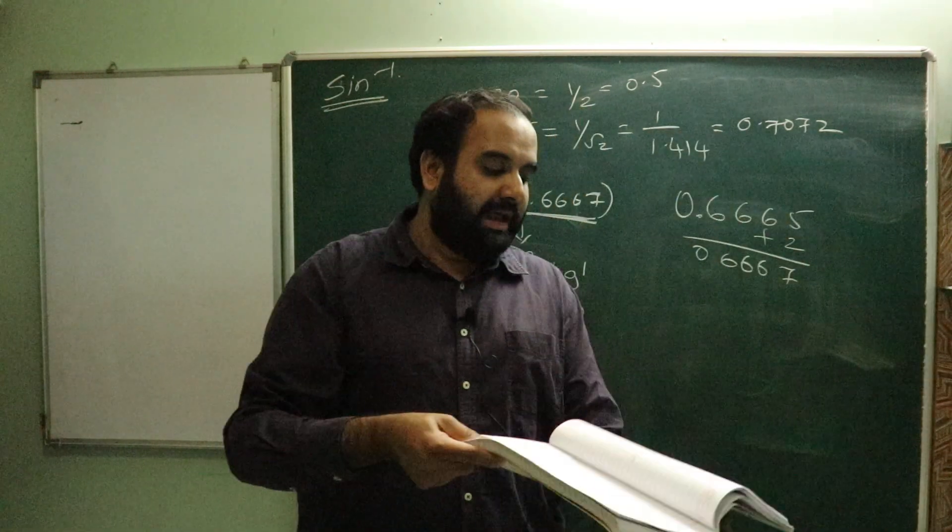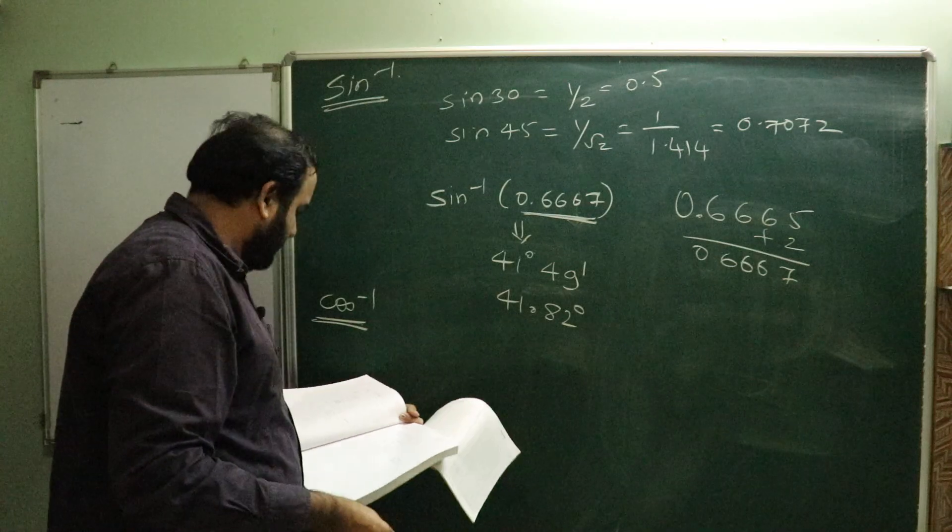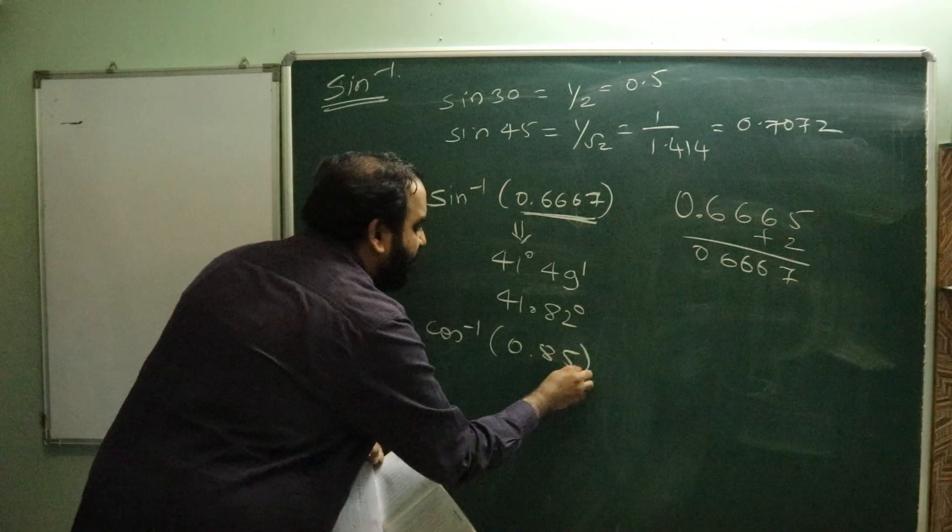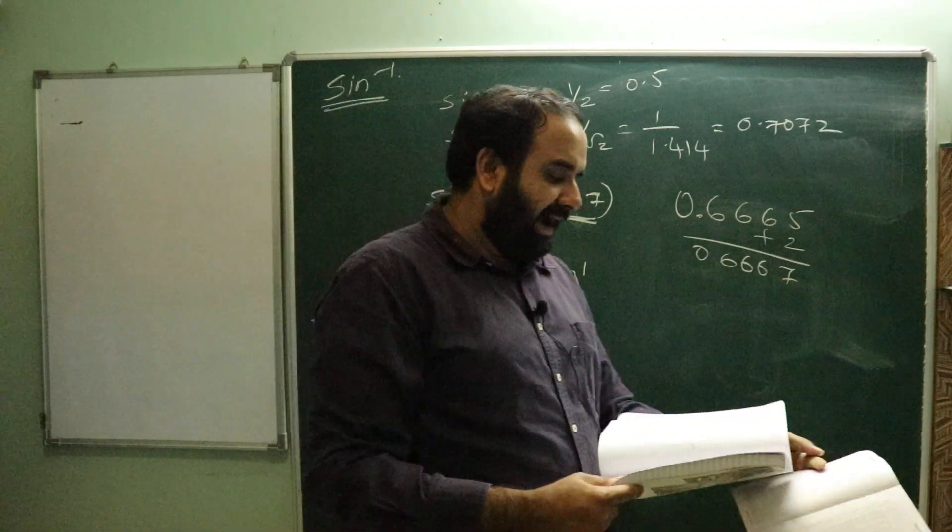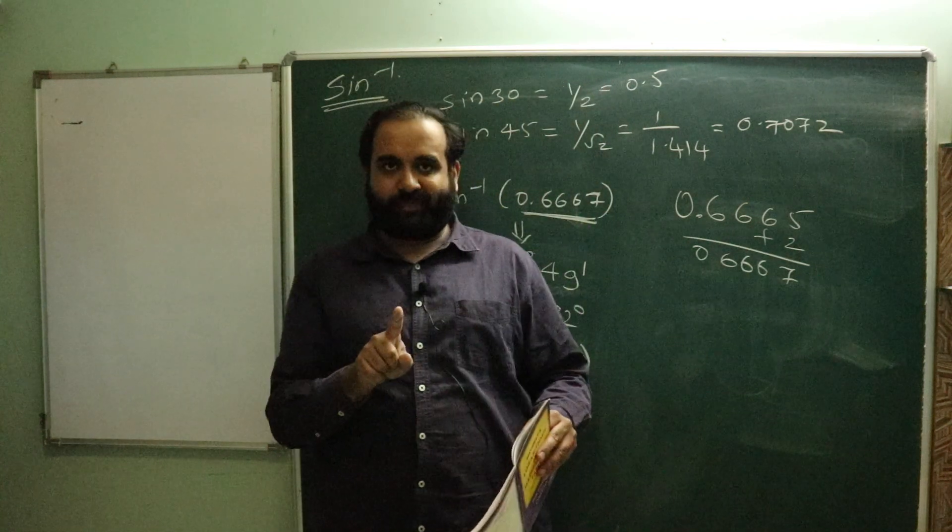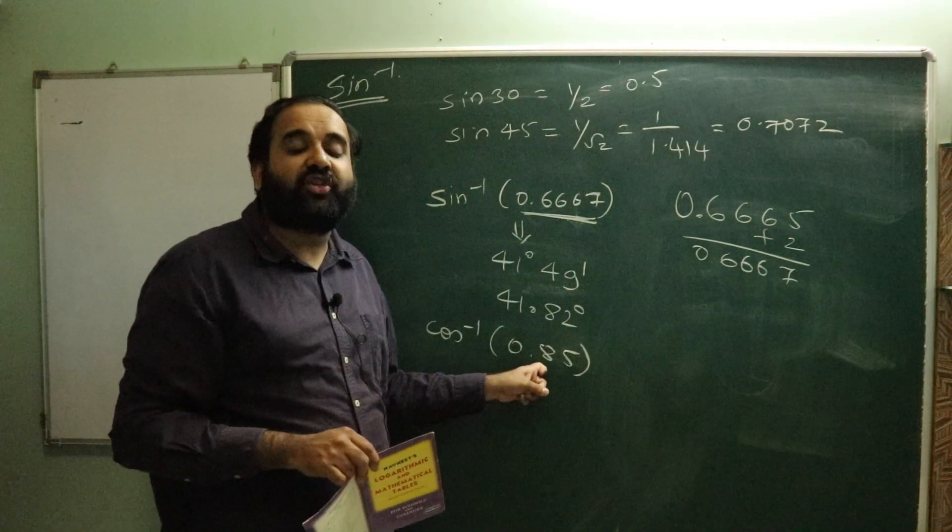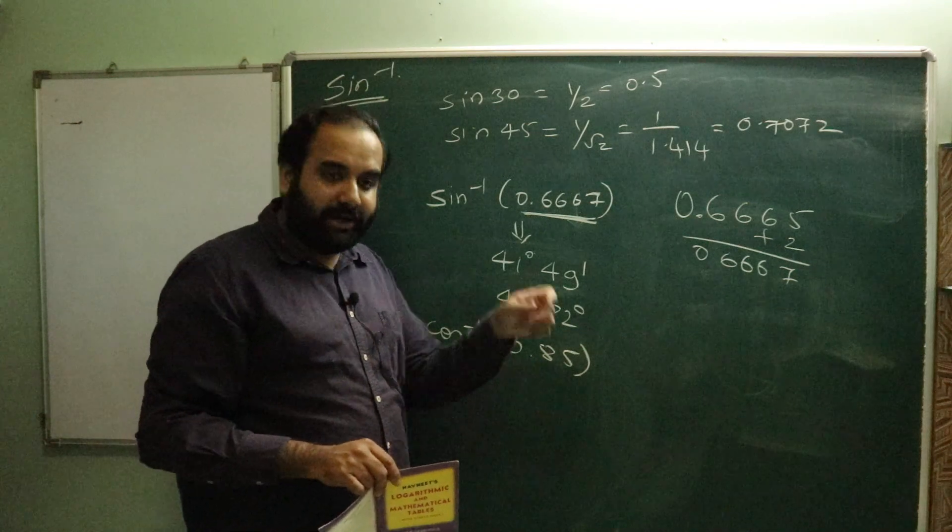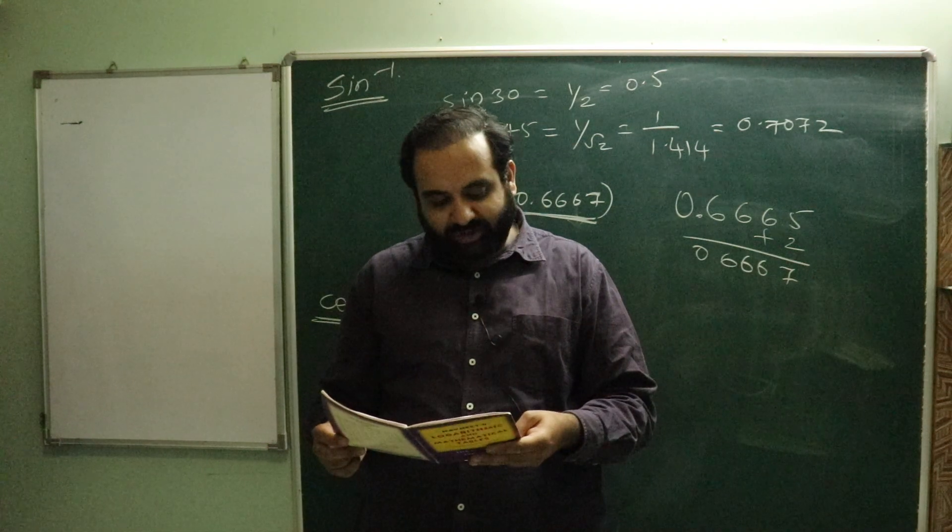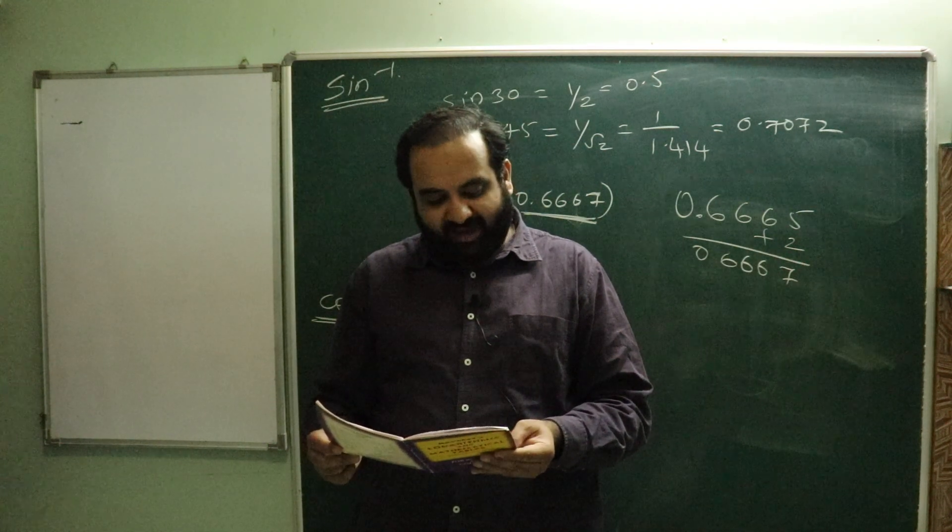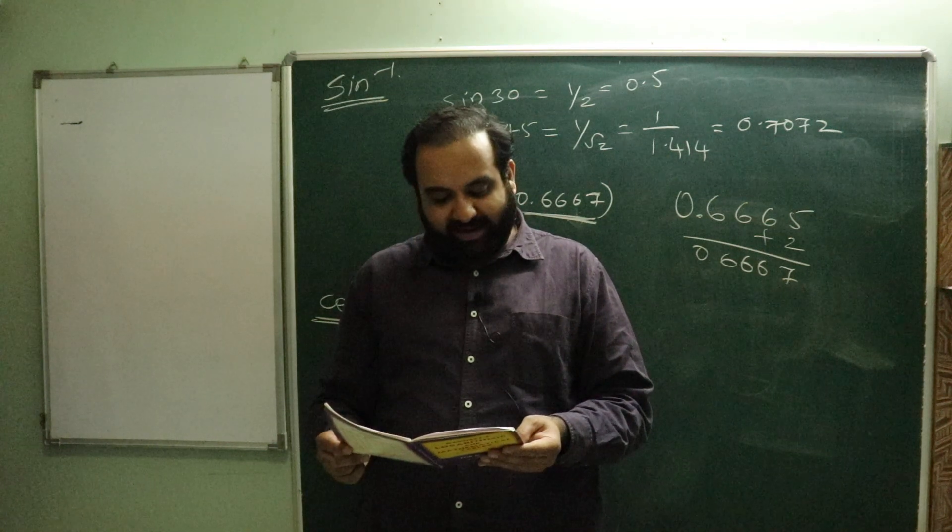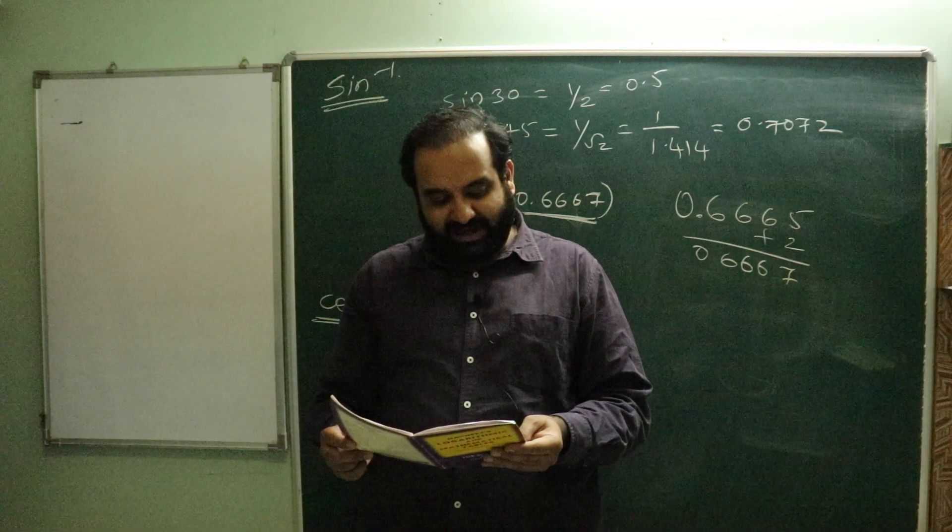This particular thing many students make a lot of mistake in. Let us again take one example here. I have to find out cos inverse of 0.85. So while finding this, again my procedure remains the same. What is the procedure? I will have to search 0.85 in the particular table. So let's search where 0.85 is.